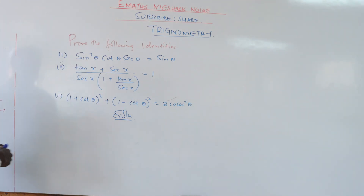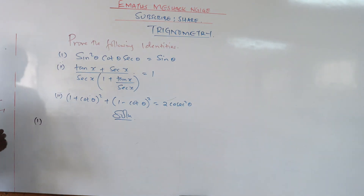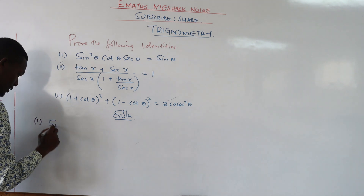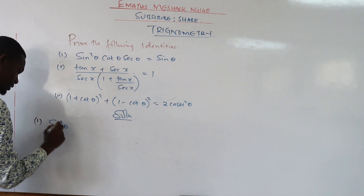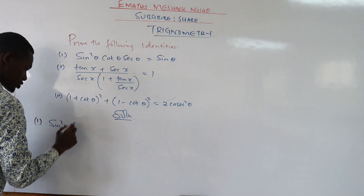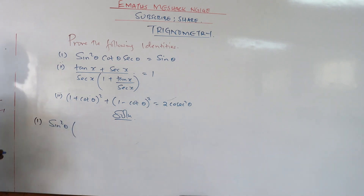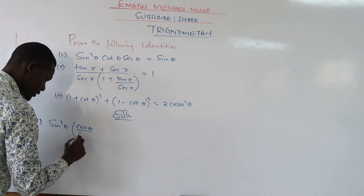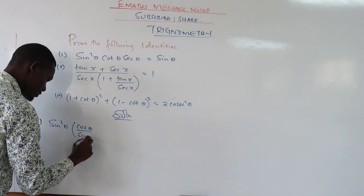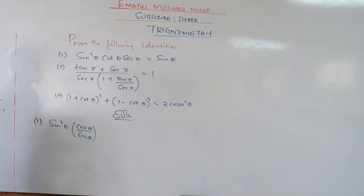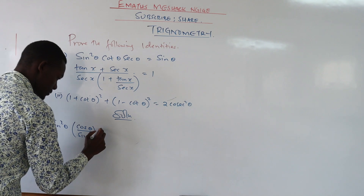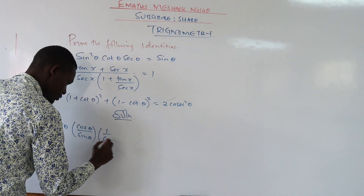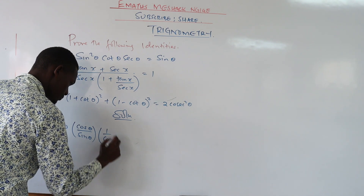So we have the left-hand side. In the first one, we shall have sine squared theta. Now, what is cot? We said cot is cosine over sine — cosine theta over sine theta. Then what is sec? Sec is one over what? One over cosine theta.